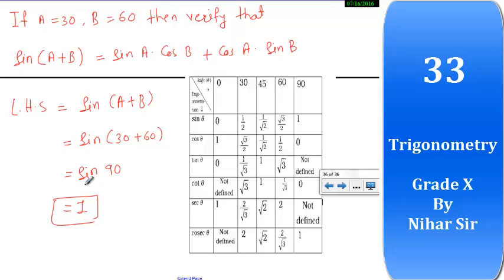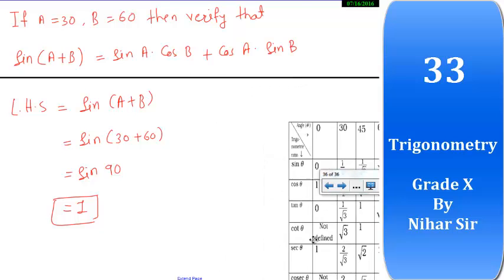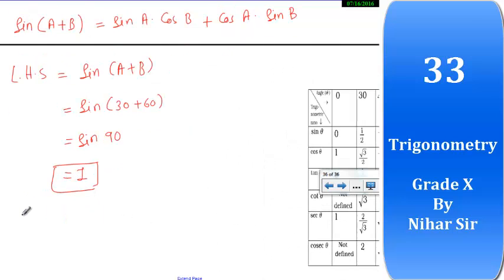Now let's go ahead, let's go for RHS. So RHS equals sin A, sorry it's not alpha, it's sin A into cos B plus cos A into sin B. Now sin A equals what? So sin A equals sin 30, then cos 60.